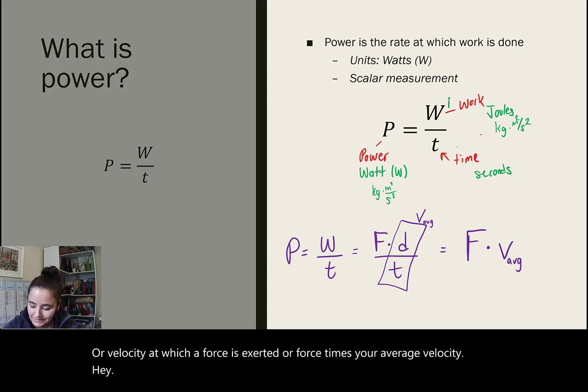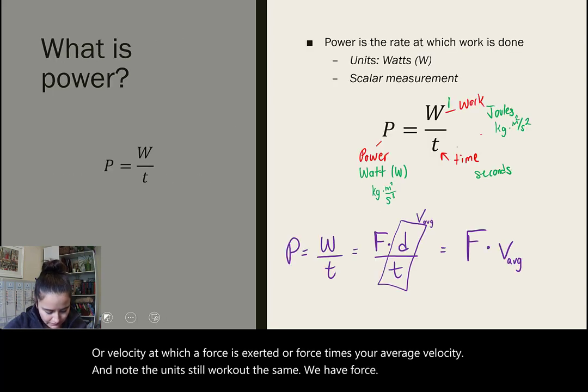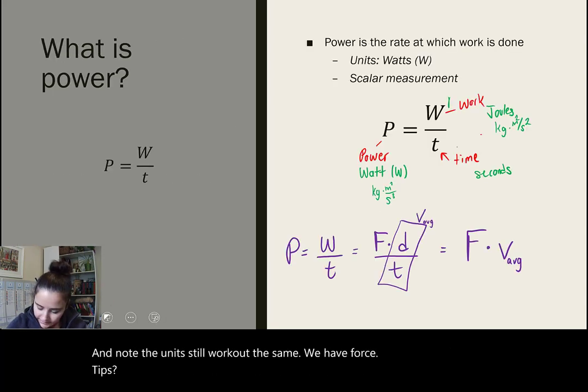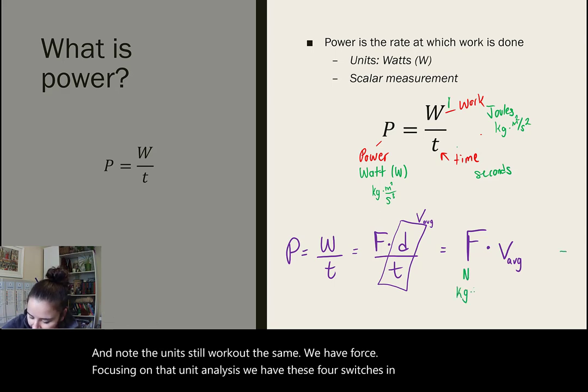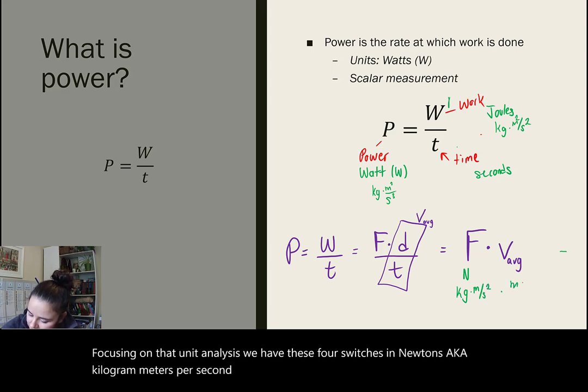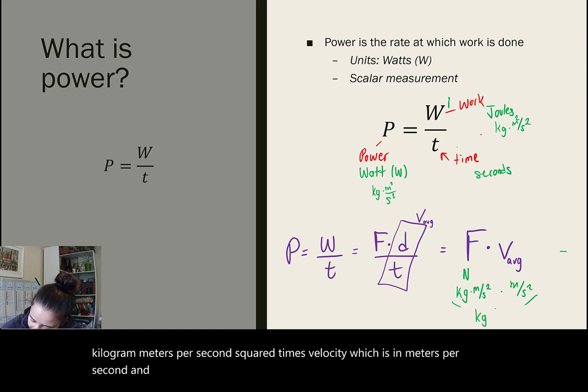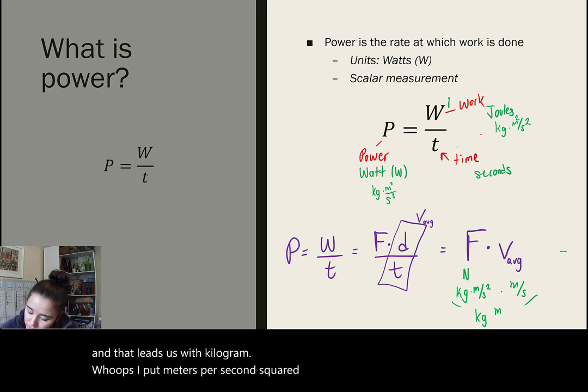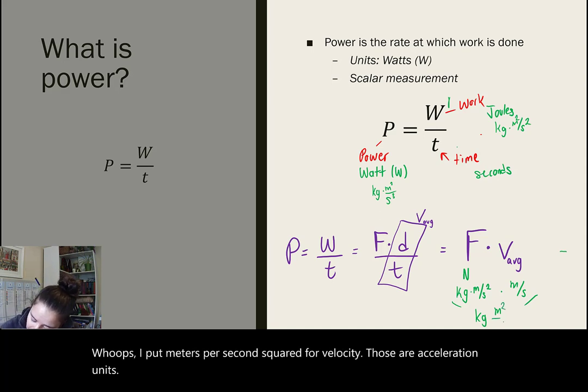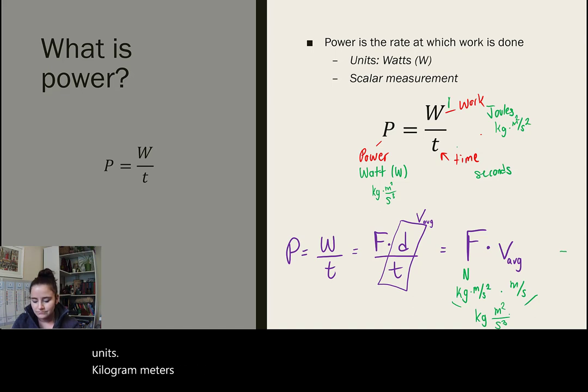And the units still work out the same. We have force, which is in newtons, aka kilogram meter per second squared, times velocity, which is in meters per second. And that leads us with kilogram meters squared per second cubed. So, you can see the units work out as well.